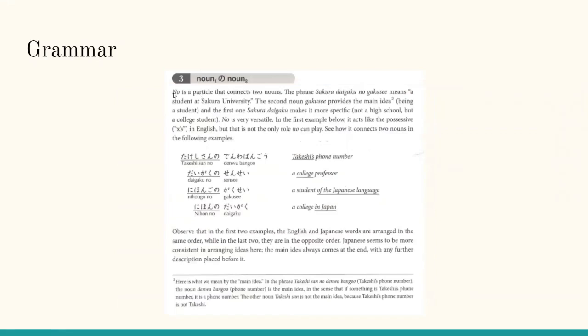Noun no noun: No is a particle that connects two nouns. The phrase Sakura daigaku no gakusei means a student at Sakura University. The second noun, gakusei, provides the main idea, being a student. And the first one, Sakura daigaku, makes it more specific, not a high school but a college student. No is very versatile. In the first example below, it acts like the possessive X's in English, but that is not the only role no can play. See how it connects two nouns in the following examples. Takeshi-san no denwa bangou means Takeshi's phone number. Daigaku no sensei means a college professor. Nihongo no gakusei means a student of the Japanese language. Nihon no daigaku means a college in Japan.